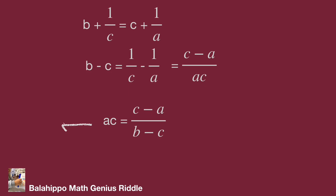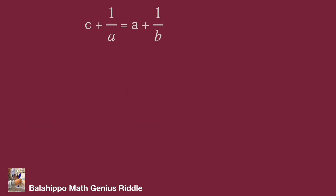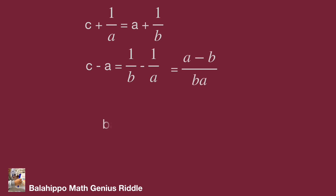Do it again with the same operation for the third equation: C plus 1 over A equals A plus 1 over B. We easily get B times A equals A minus B over C minus A. So now we have all three product equations.